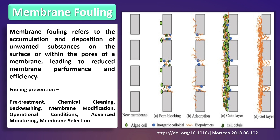Advanced monitoring: employing sensors and monitoring systems can help detect early signs of fouling, allowing for timely intervention. Membrane selection: choosing the appropriate membrane material, pore size and configuration for the specific application can affect fouling tendency. Despite these measures, membrane fouling is a persistent challenge and ongoing research aims to develop new membrane materials, designs and fouling-resistant technologies to improve membrane performance and prolong membrane life.